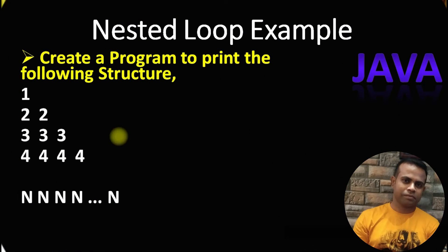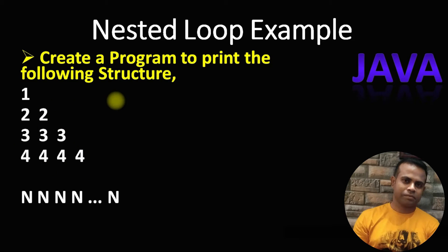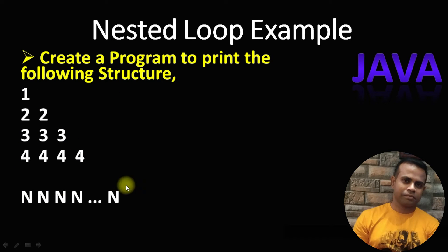If you already completed the previous day's example, then only start this one; otherwise go to the previous day's example, because there I have already explained the logic of nested loops and the flowchart of nested loops. Today's example simply uses the same concept with a bit of modification, so it is highly recommended that you complete the previous day's example first.